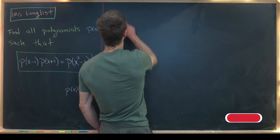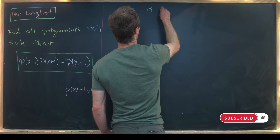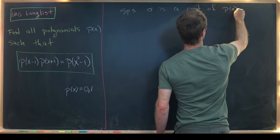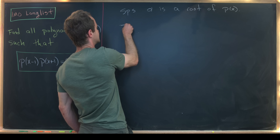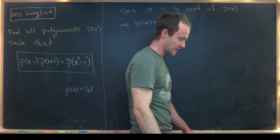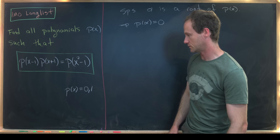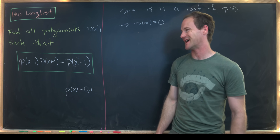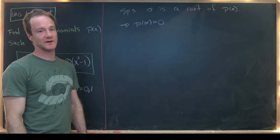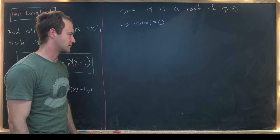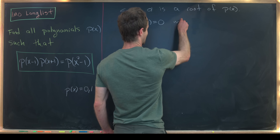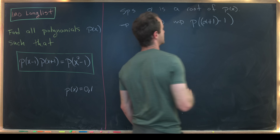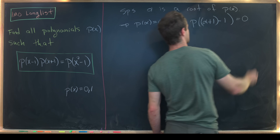Now let's look for other solutions. Suppose α is a root of our polynomial p(x), meaning p(α) = 0. We've already covered all constant polynomials satisfying this rule. We can rewrite α as (α+1) - 1, so p((α+1) - 1) = 0.